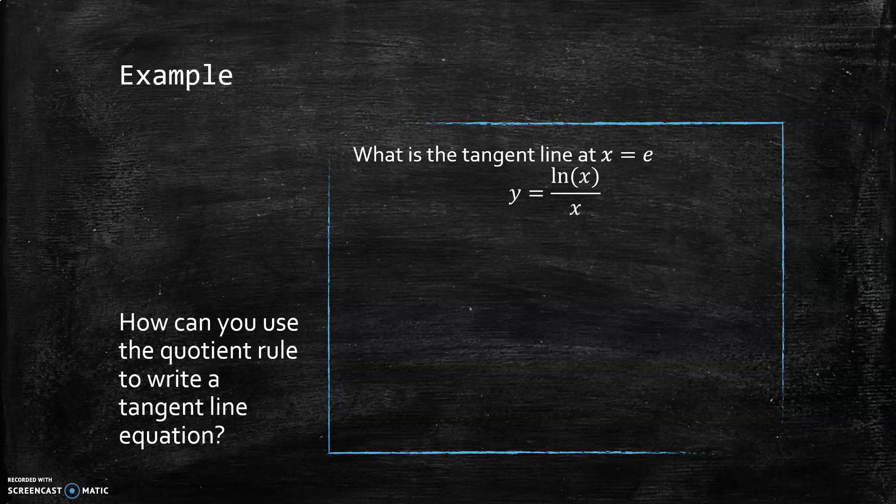We're going to do a tangent line equation using the quotient rule. I would recommend pausing and restarting after you've tried this problem on your own. To write a tangent line I need three things: an x coordinate (x = e), a y coordinate (that's going to be f(e), so ln(e) is 1, and 1/e), and I need a slope.